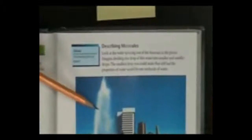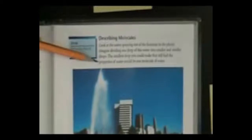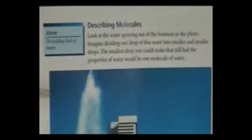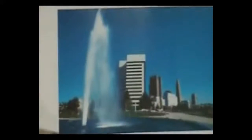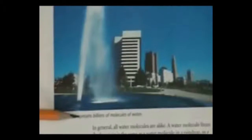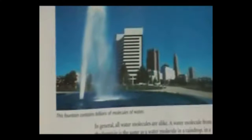Look at the water spraying out of the fountain in the photo. Imagine dividing one drop of this water into smaller and smaller drops. The smallest drop you could make that still had the properties of water would be one molecule of water. The caption to the picture reads: This fountain contains, or has, billions of molecules of water. We'll talk about what we see in this picture in a moment.